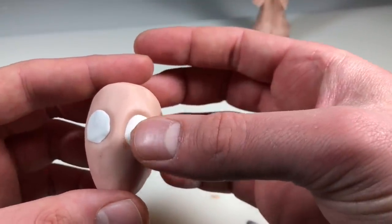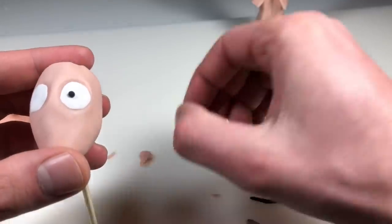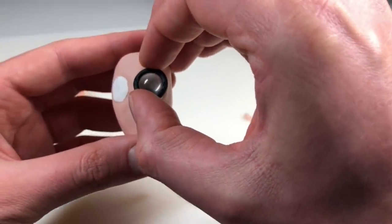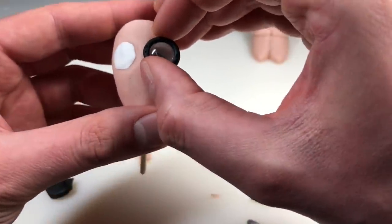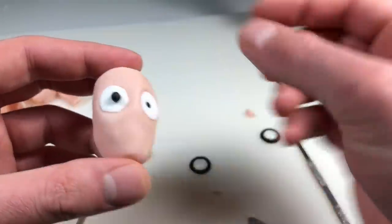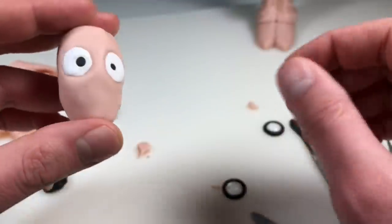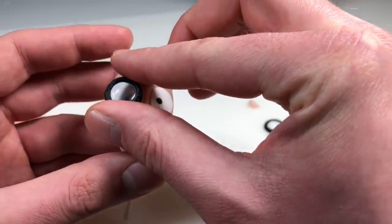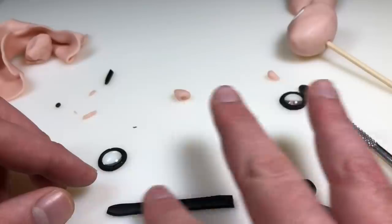So once the white clay is in, I'm just going to create a pupil or iris with some black clay. Making sure that looks pretty good before moving forward. Pressing that in and then repeating the process on the other side. I want him to look a little cross-eyed, so hence the cross-eyed position. And then one pupil is bigger than the other.